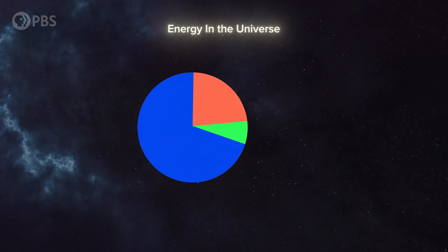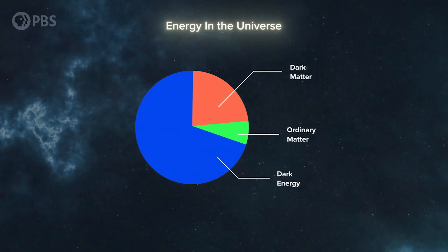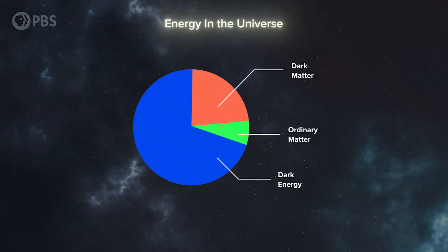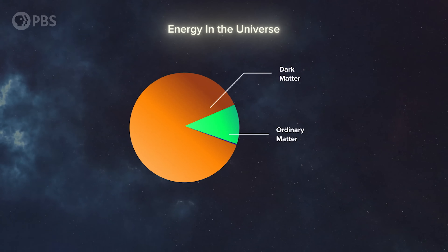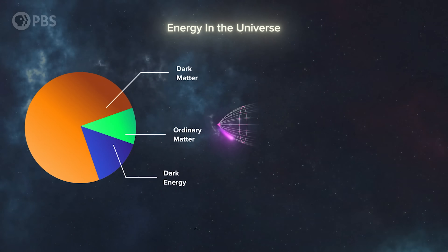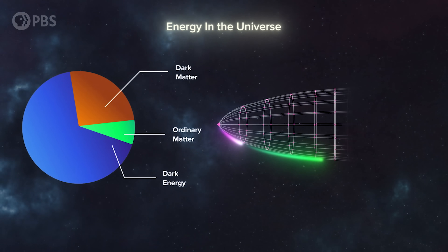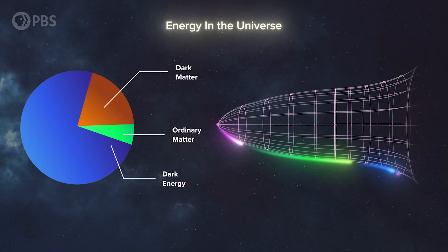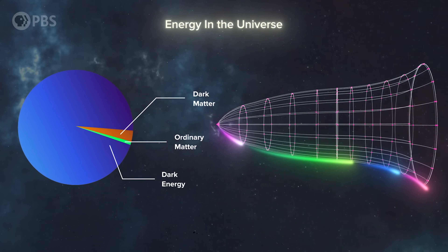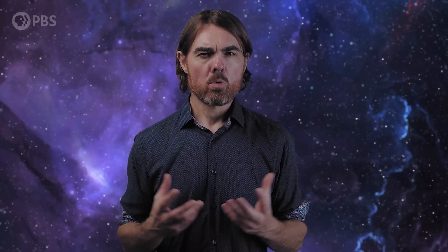Quintessence could also help solve some of the uncomfortable coincidences that seem necessary with a cosmological constant dark energy. Currently around 70% of the energy in the universe is dark energy, and the remaining 30% is mostly matter, including dark matter. As the universe expands, matter dilutes away, while most versions of dark energy stay constant or relatively constant, or even increase in some models. The universe will spend the vast majority of both its past and future history with a huge difference between the densities of dark energy and matter. So why do we happen to live in a period where these are within a factor of a few of each other, and exactly when the acceleration begins?